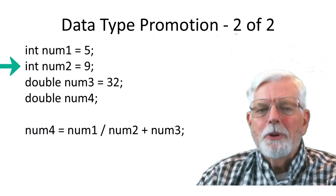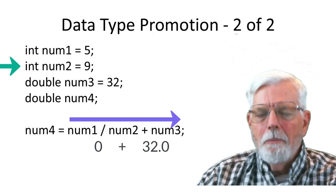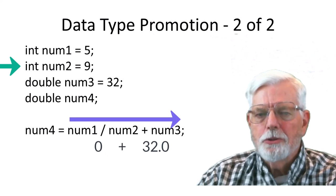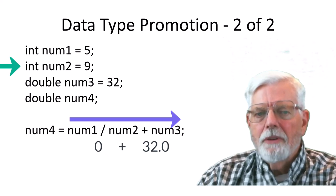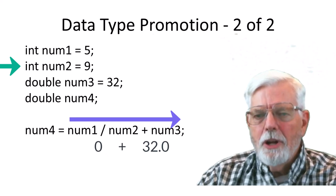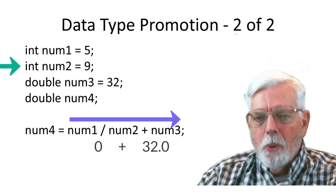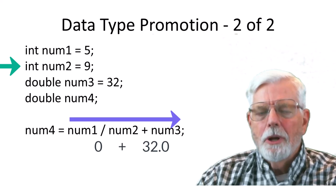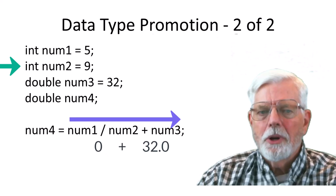Let's change NUM2 to an integer. Moving from left to right, NUM1 divided by NUM2 is an integer division, 5 divided by 9, which is an integer 0, not 0.555556. The integer result of the integer division is added to NUM3, which is a double. The integer result of 0 is promoted to a double, 0.0, when added to the double 32, giving 32.0, which is then stored into NUM4.